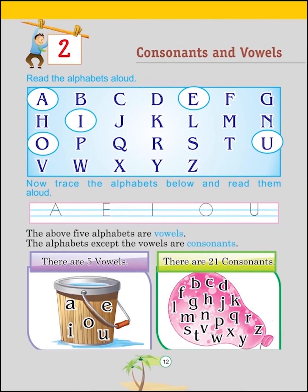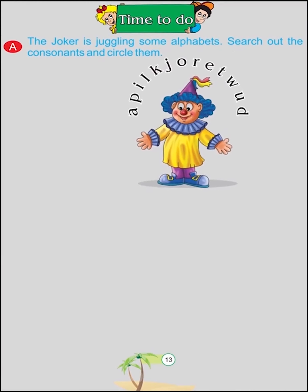The 21 consonants are: B, C, D, F, G, H, J, K, L, M, N, P, Q, R, S, T, V, W, X, Y, Z. Time to do: The joker is juggling some alphabets. Search out the consonants and circle them: P, L, K, J, R, T, W, D.